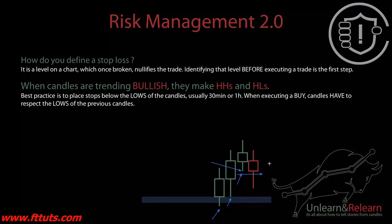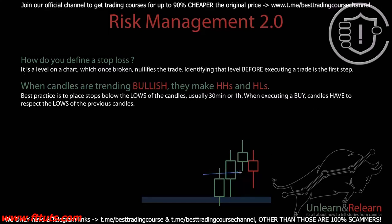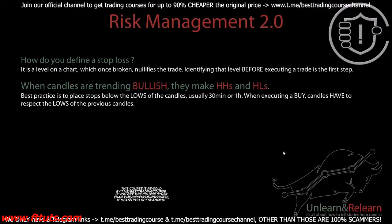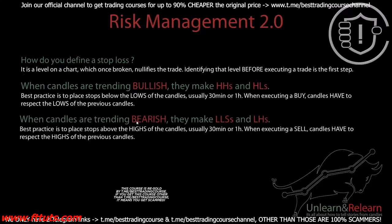Risk management in this sense is really important. Whenever you're in profits, you're moving your stops below the lows of the candles on buys. Sometimes what traders do is say: if price is going to come down and break the low of the previous candle, they might want to close off a percentage of their position. Regarding when the low is broken — it means the wick, because the wick represents the full low of the candle.